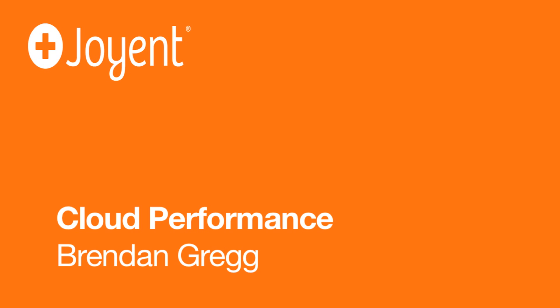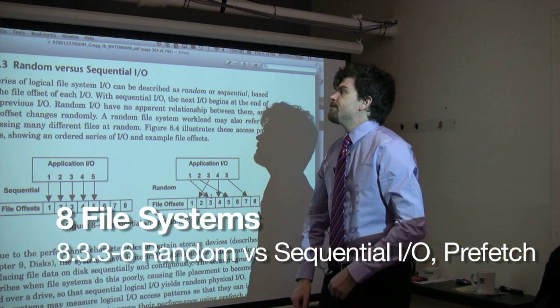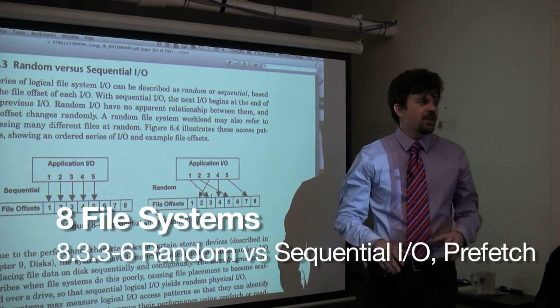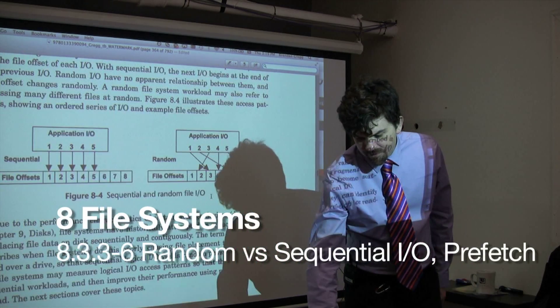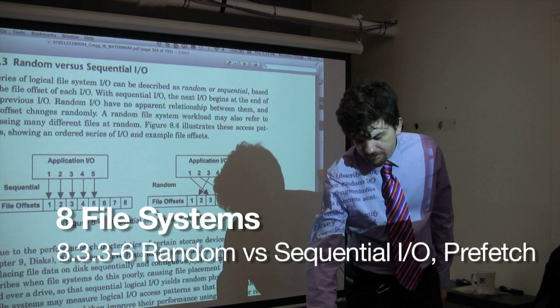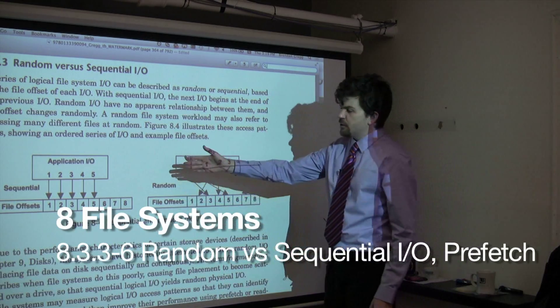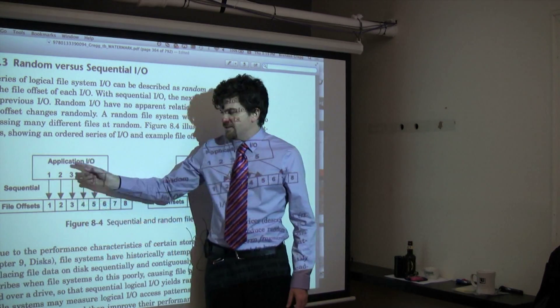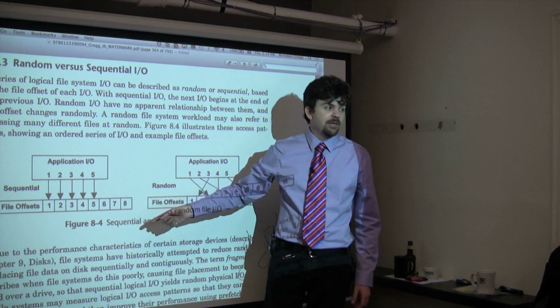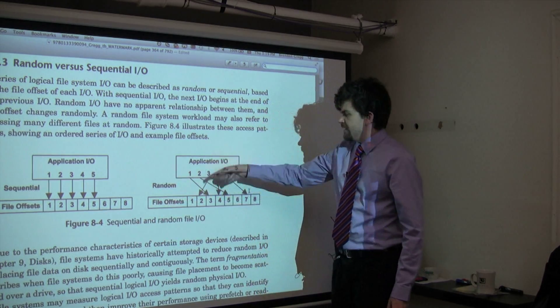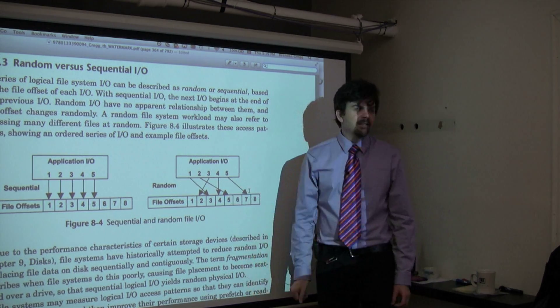Random versus sequential I/O. Just so that you understand these concepts, this might be really obvious, but just to be sure: sequential I/O is where we are accessing file offsets in series, whereas random I/O is where we are accessing file offsets at random.